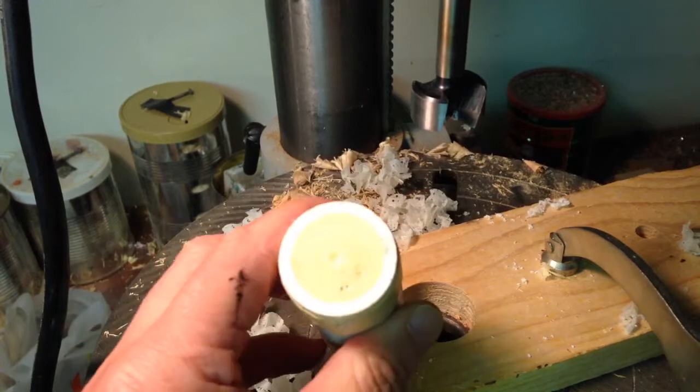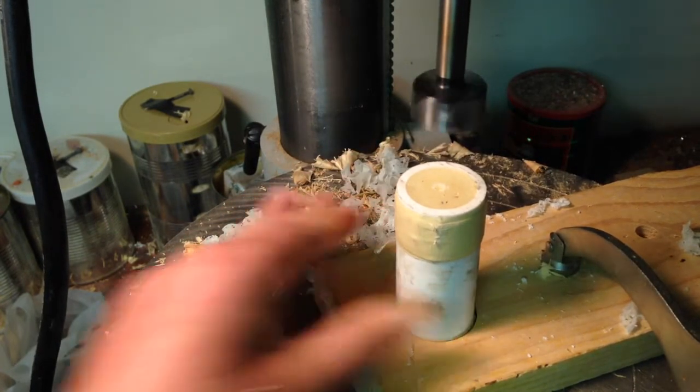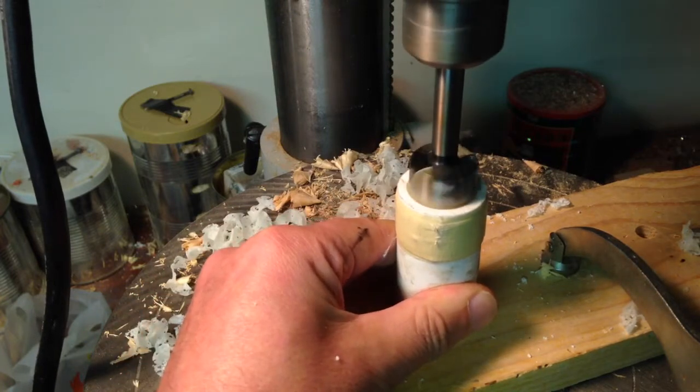Once done, I then flipped the adapter over and drilled the 1 inch as well as the 7/8 inch holes that will fit on the top of the pole holder.